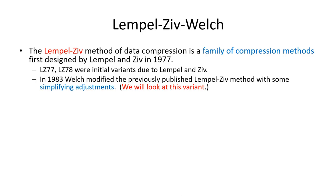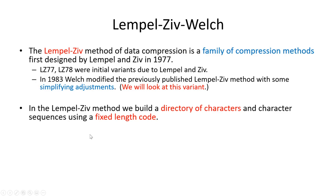Welch noticed that the earlier versions could be simplified in a couple of places, and as a result he distilled out a nice, easy-to-understand variant of the same type of algorithm. Since 1983, a number of additional variants have been introduced. I'll rely on Welch's version because it's the simplest. Today you might expect some variant of this algorithm being used, but probably not just the simple version due to Welch in 1983.